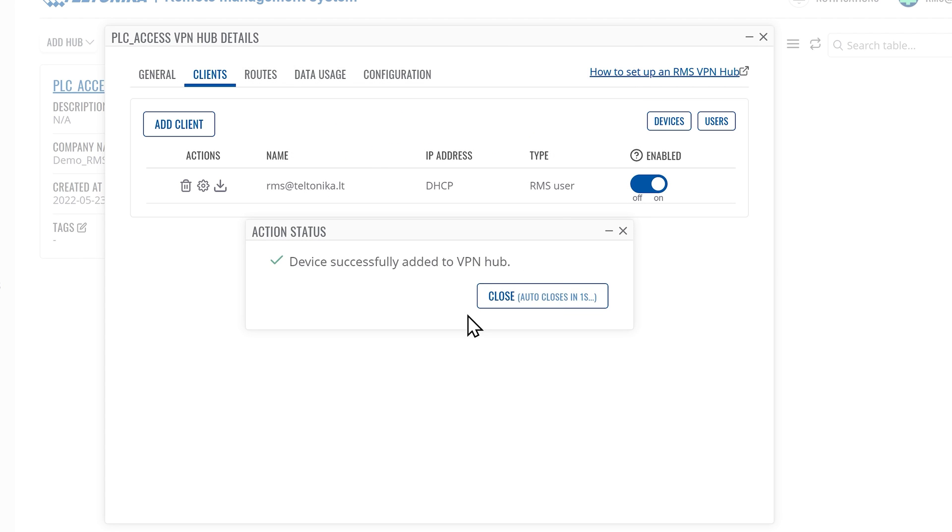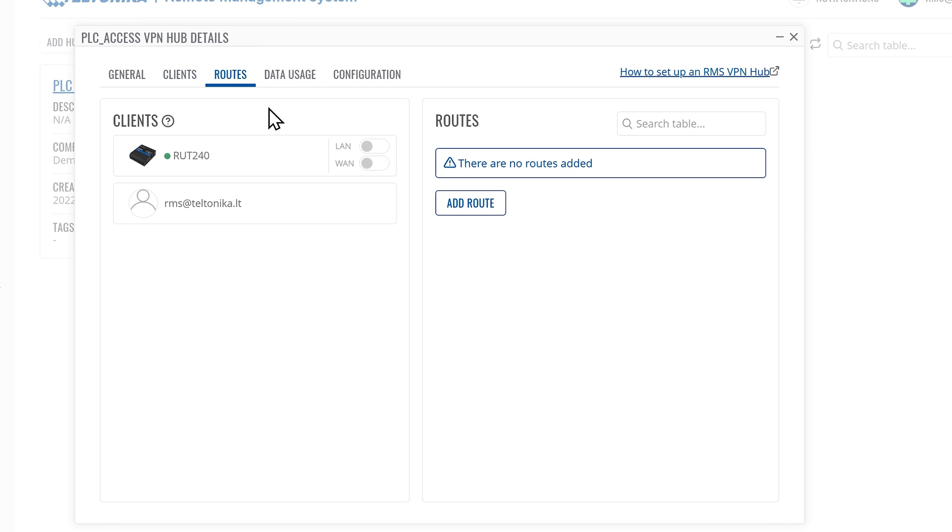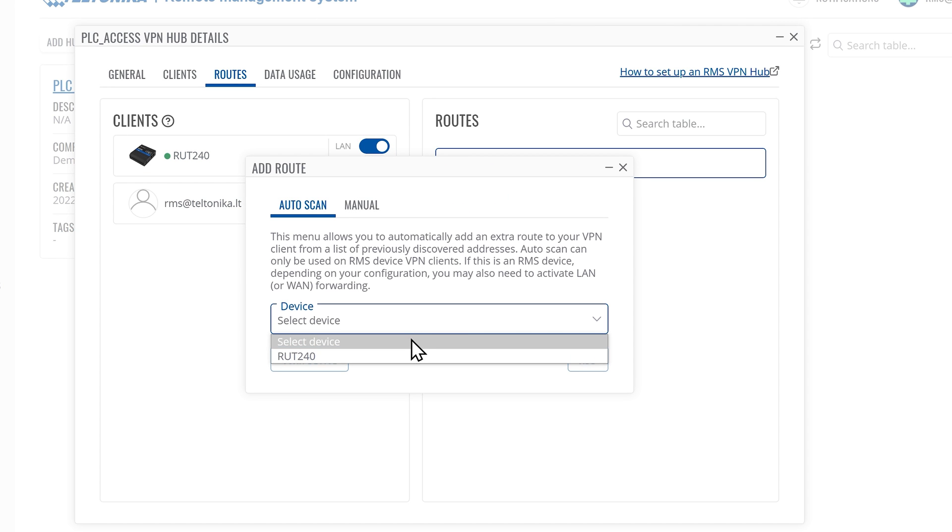The selected device will appear in the clients list. Next, go to the Routes tab. Toggle LAN forwarding to reach the PLC devices connected to the LAN. Click the Add Route button to set up a new route. From Auto Scan, select your specific device.